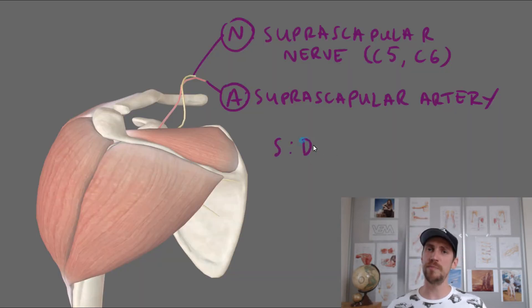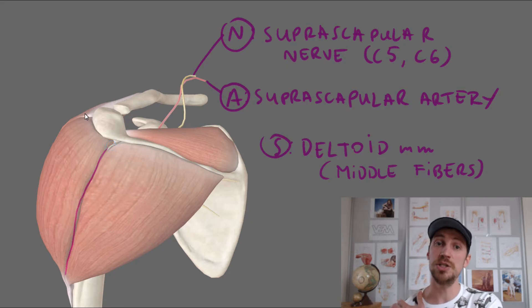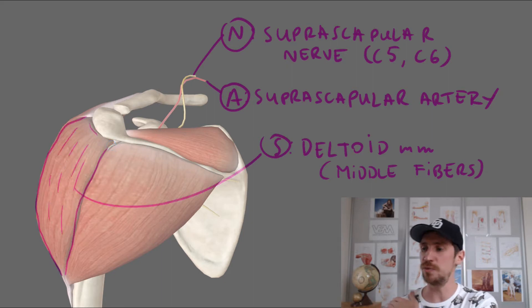Synergists are all the muscles that will act the same way — they will be doing exactly the same work. In this particular case, supraspinatus and deltoid middle fibers will both produce elevation of the humerus — abduction of the humeral bone, the humeral bone going towards the ceiling.